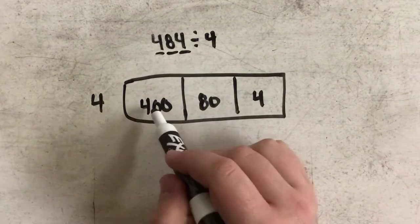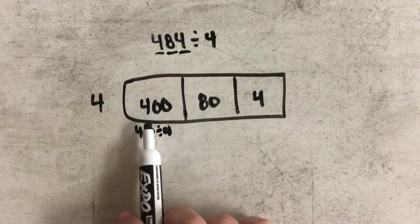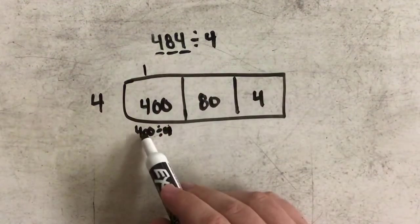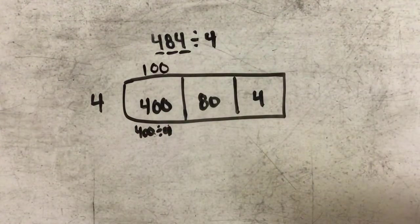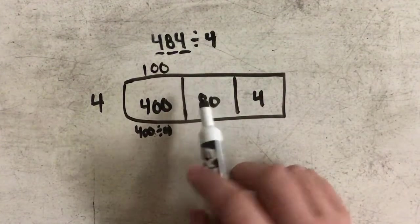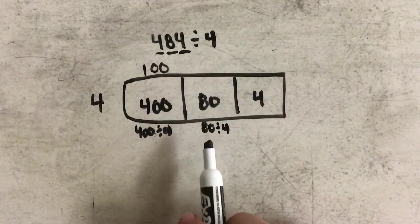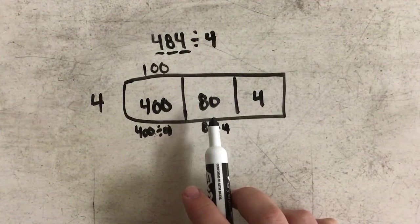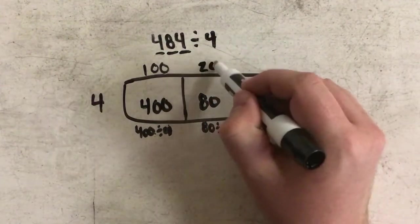So I'm going to start with 400 divided by 4, which is really just 4 divided by 4, which is 1, with two zeros included. If I come over to my next box, I'm now looking at 80 divided by 4. Well again, if I cover up my zero, I'm really just looking at 8 divided by 4, which is 2, with 1 zero.